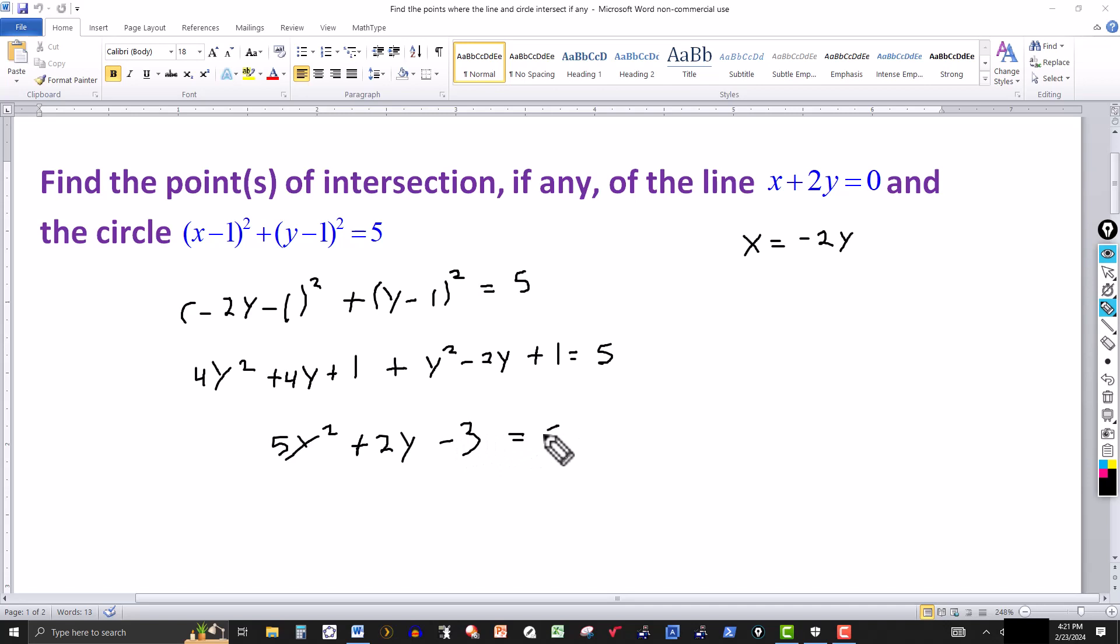So now we've got a quadratic here: 5y² + 2y - 3 = 0. And then we just factor this out. If it doesn't factor, then you would go to the quadratic formula or the method of completing the square.